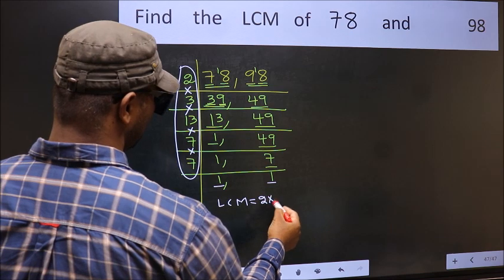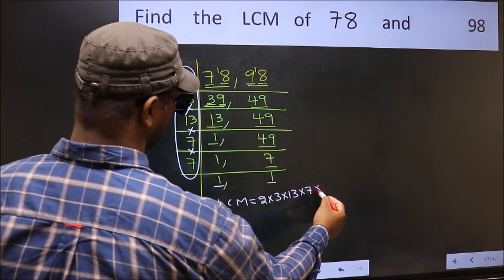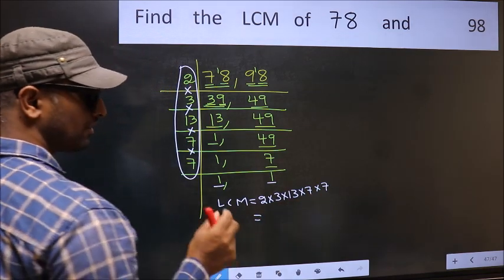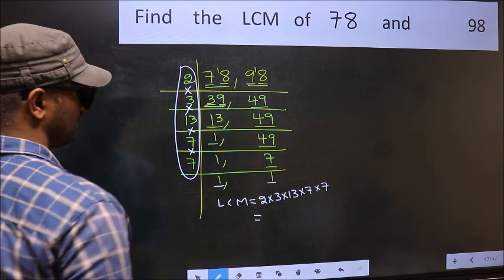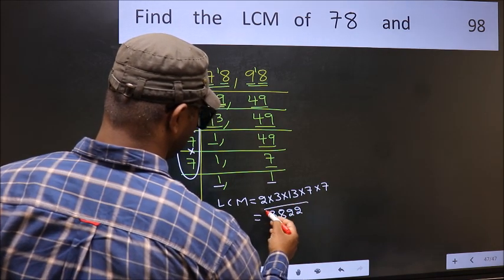That is 2 into 3 into 13 into 7 into 7. When we multiply these numbers, we get 3822 is our LCM.